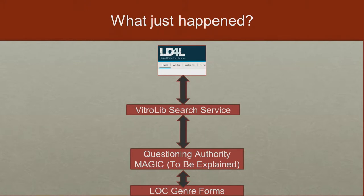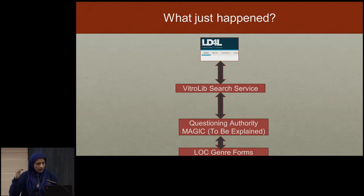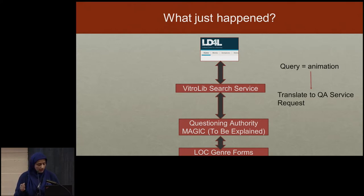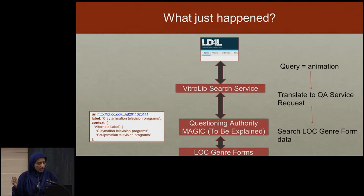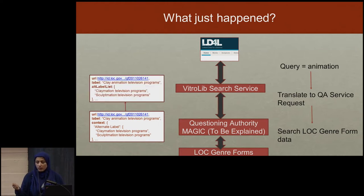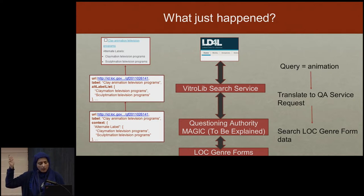Here's a quick run-through of what just happened. The query 'animation' goes off to code within VitroLib that translates it to the Questioning Authority lookup. That questioning authority endpoint then searches the Library of Congress Genre Forms and comes back with standardized data — URI, label, and context. It gives that back to VitroLib, which has its own internal standard, massages it into what the front end expects, and then you see the label and alternate labels show up.